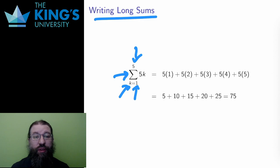The lower bound is below the sigma. Here, k equals 1 means the letter k is the index and it starts at 1. The upper bound is above the sigma. Here, k stops at 5. The index increases by 1 from the lower bound to the upper bound, so the index for this sum is k equals 1, 2, 3, 4, and 5.